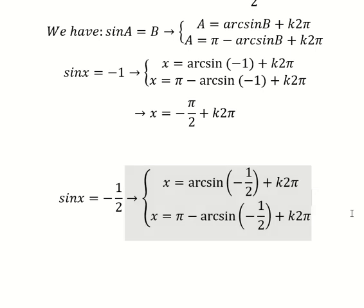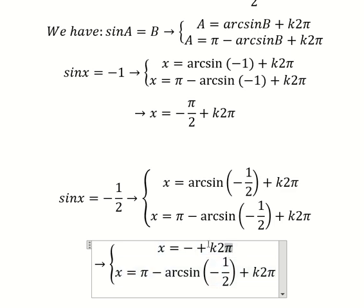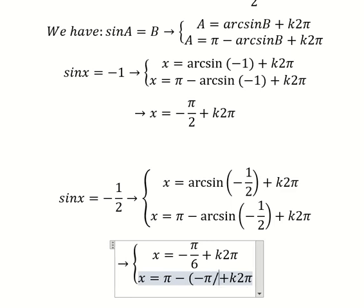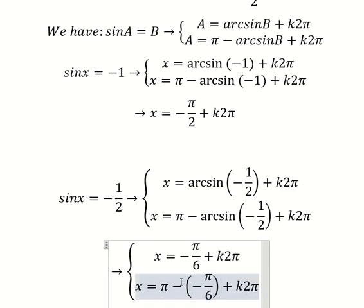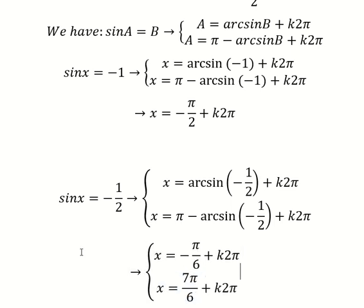Now let's go to the second one. This one you get negative π over six. And for the other form, we have negative π over six as well — negative and negative gives positive, so π plus π over six gives seven π over six. This is the final answer. Thank you for watching.